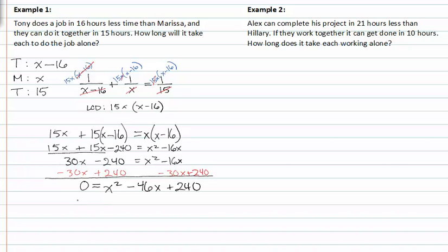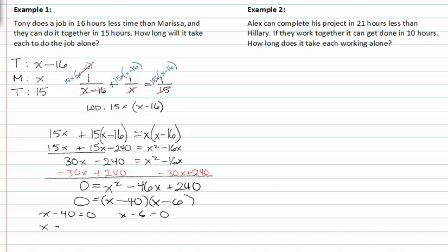Now I can factor, and I get (x minus forty) and (x minus six). Setting my factors equal to zero, I get x equals forty and x equals six.